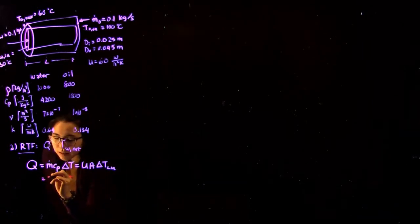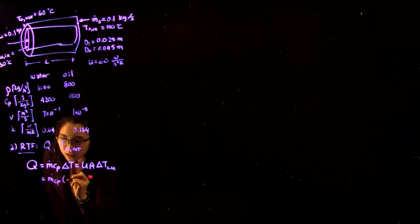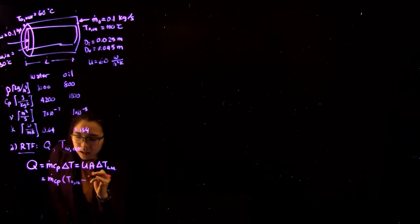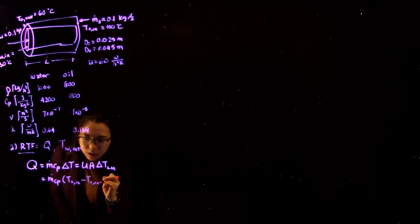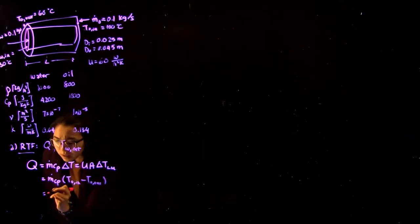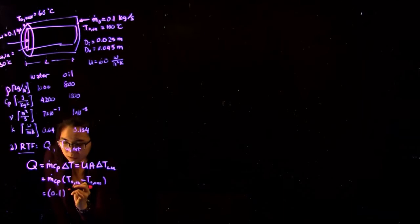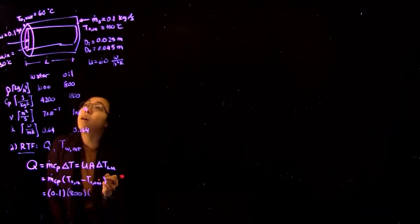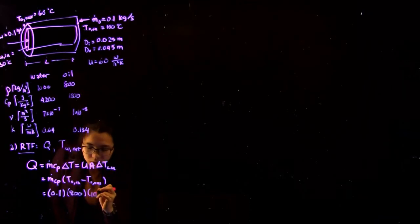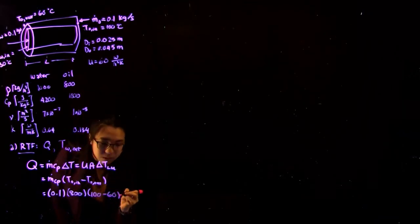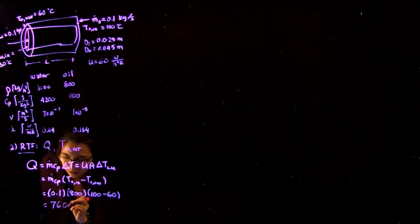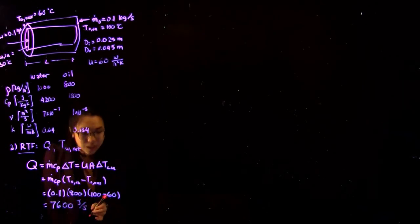We can do that by saying this is equal to MCP times temperature of the oil in minus temperature of the oil out. Substituting our values, this gives 0.1 times 800 times 100 minus 60 degrees. So that's the temperature change. This gives us a Q value of 7600 joules per second.